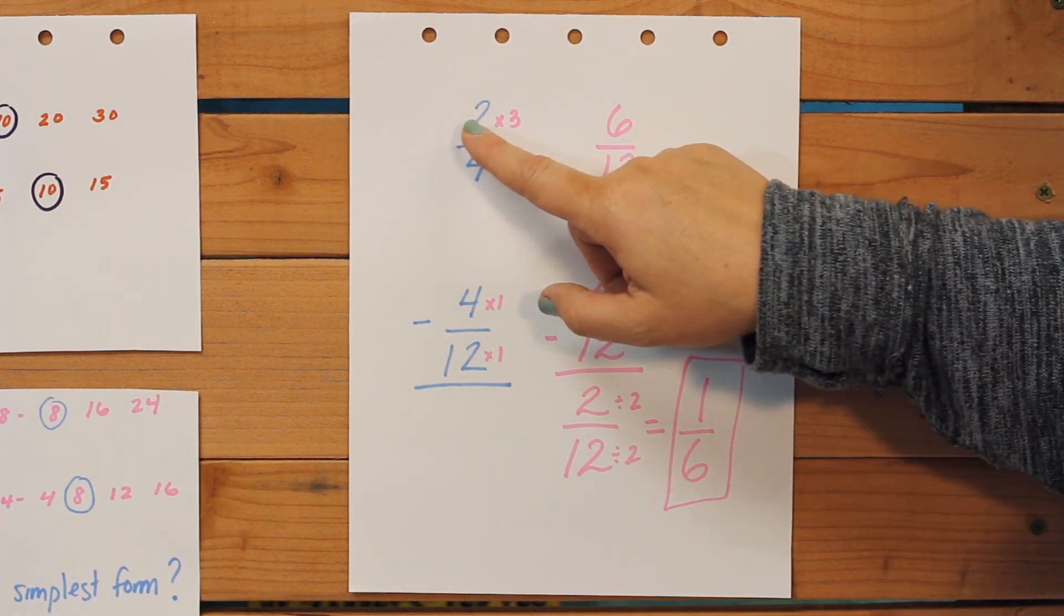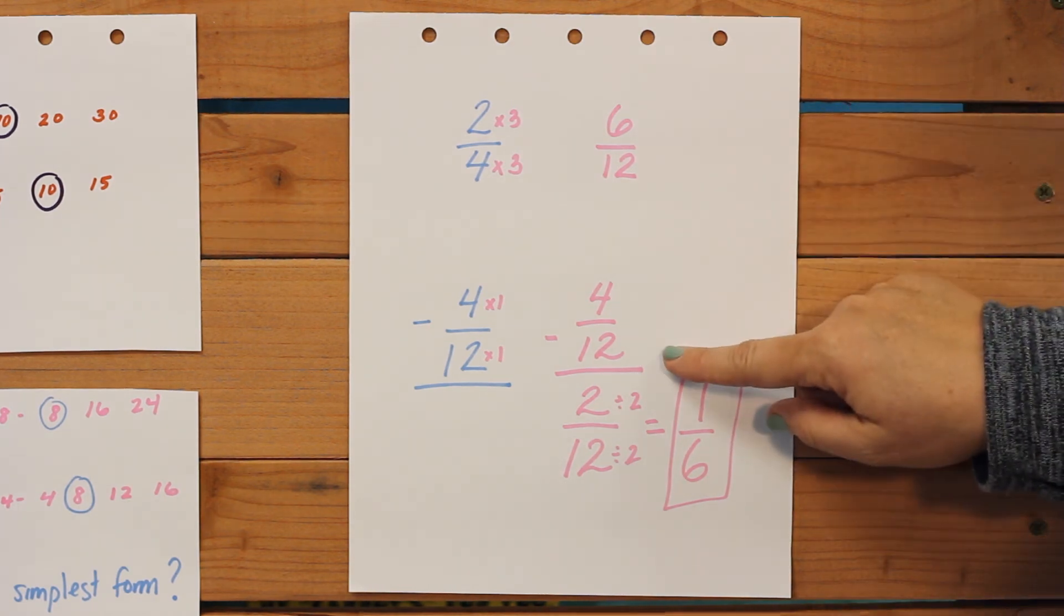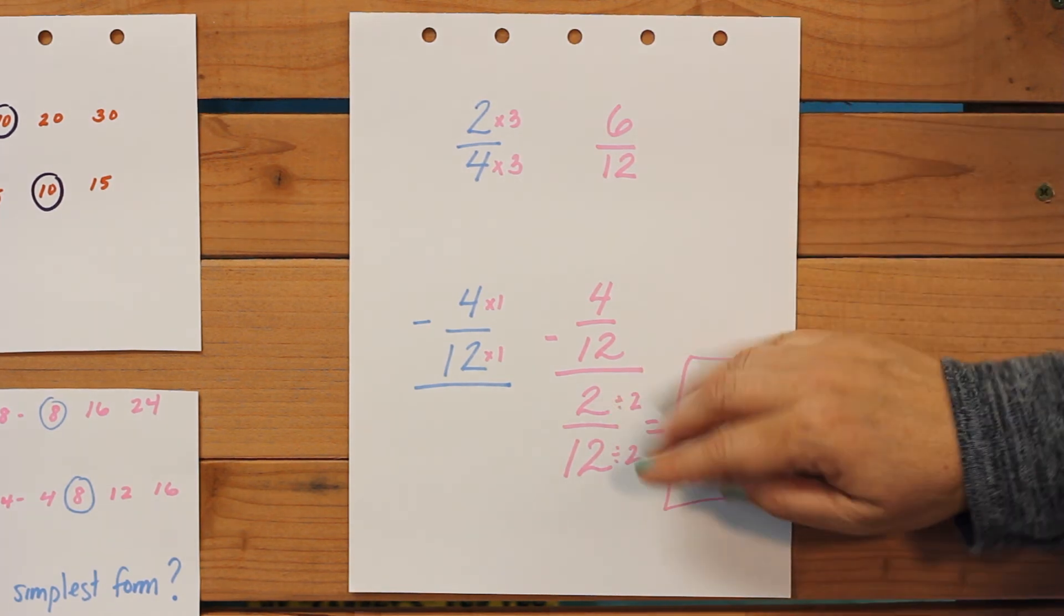Then we have to do the same thing to the numerator. Two times three is six. So now we have 6/12 minus 4/12, which is 2/12.